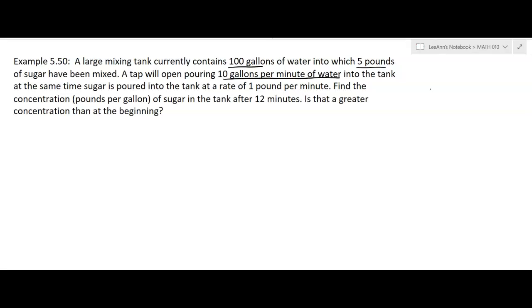At the same time sugar is poured into the tank at a rate of 1 pound per minute. So you've got sugar coming in, you've got water coming in. Find the concentration, pounds per gallon, of sugar in the tank after 12 minutes. Is that a greater concentration than at the beginning? So let's go to the rational function part.